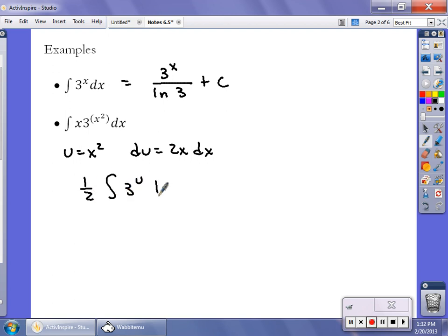The x dx is part of my derivative x dx right there. 1/2 comes out front because I have to divide both sides by 2, so it becomes 1/2 times 3 to the u over the ln of 3 plus C.